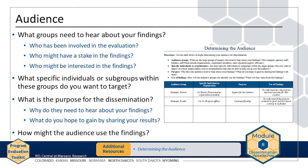Start by listing possible end users for your information, being as specific as possible. First, identify groups that may be interested in the results. Consider anyone who is involved in the evaluation, groups that might have a stake in the findings, and more broadly, those who might have an interest in the findings. Then, identify specific names, titles, or subgroups of individuals within each of the target groups. You don't need to list everyone by name, but titles or roles in an organization can be very useful. The list represents your initial audience for dissemination — think big, and you can always narrow the list later if necessary.